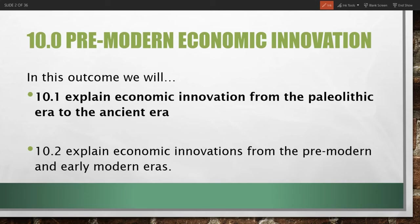Welcome to Social Studies 2201. This is Unit 4, Economic Change, Outcome 10, Premodern Economic Change. In this outcome we have two delineations. The first topic we'll look at today is 10.1: Explain Economic Innovation from the Paleolithic Era to the Ancient Era — the earliest economic innovations that humans developed. After this we'll look at 10.2: Explain Economic Innovations from the Premodern and Early Modern Era, so much more recent.